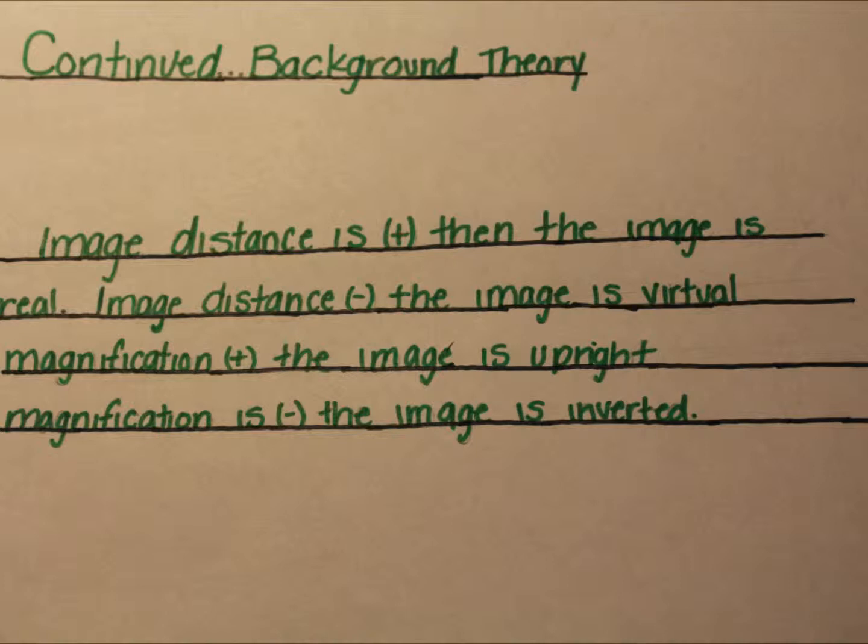If the image distance is positive, then the image is real. If the image distance is negative, then the image is virtual. If the magnification is positive, then the image is upright. If the magnification is negative, then the image is inverted.